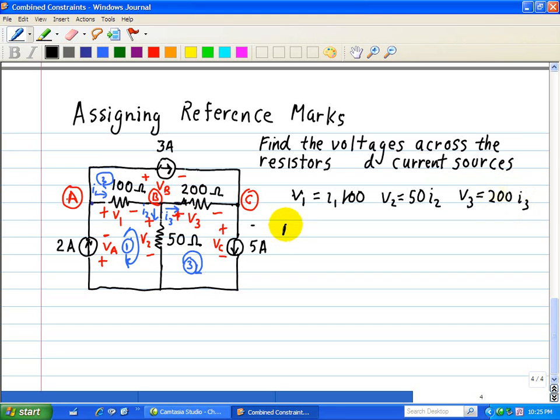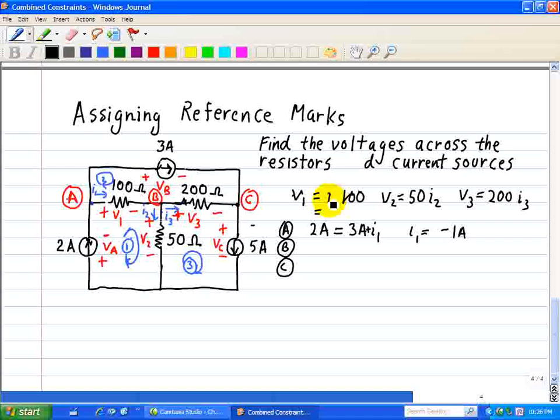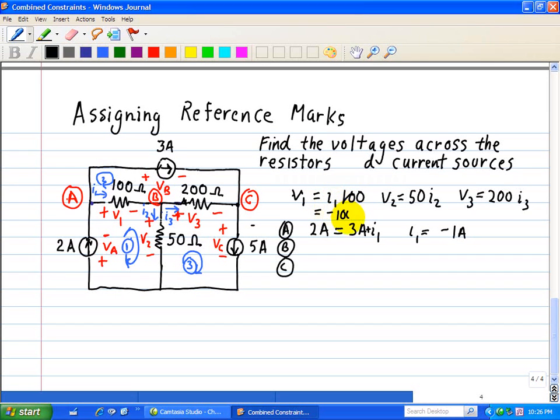Now we're going to do the KCL equations at node A, node B, and node C. So the incoming current going into node A is 2 amps. The outgoing current is equal to 3 amps plus I1. Therefore, I1 is equal to minus 1 amps. So that implies that V1, I1 is minus 1 times 100, so that's minus 100 volts.